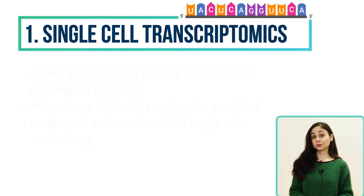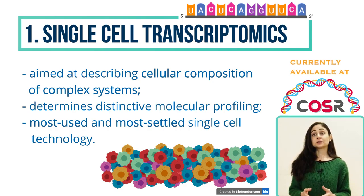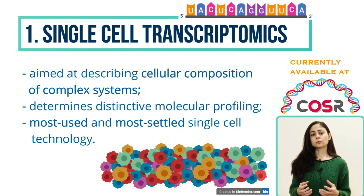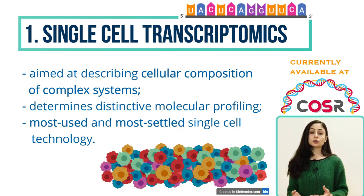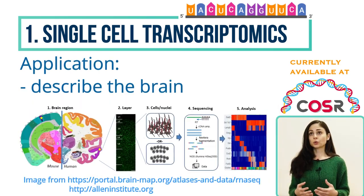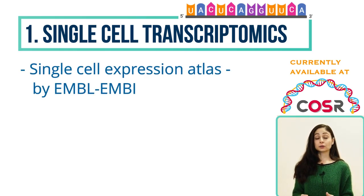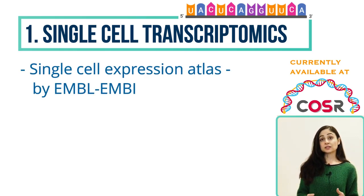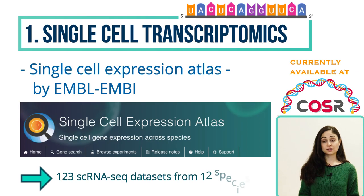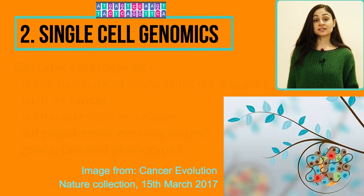The first case is single-cell transcriptomics. If we want to describe the cellular composition of a complex system, we could determine the distinctive molecular profiling by single-cell RNA sequencing. This is one of the most used single-cell technologies today, and also the most settled among all single-cell methods. This approach has been used to describe many complex systems such as the brain. Most previously published data can also be interrogated through the Single-Cell Expression Atlas, launched in 2019, which currently includes 123 single-cell RNA sequencing datasets from 12 species.